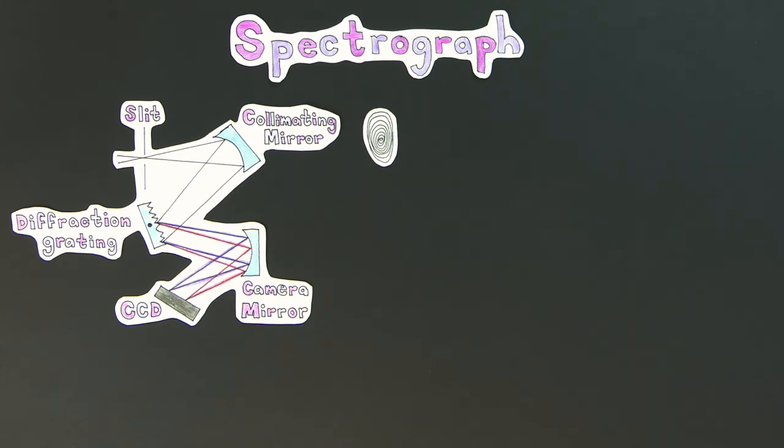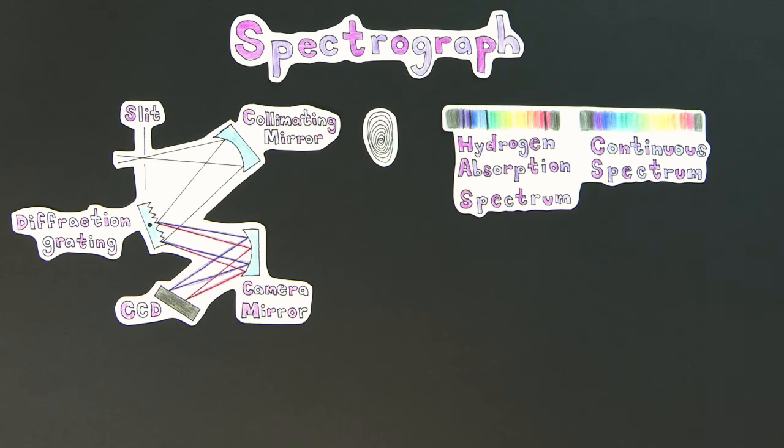Another impressive instrument is a spectrograph, which collects data on the chemical composition of an object. Each object in the universe will have a unique spectra associated to it, like a fingerprint. When observed through an optical telescope, the spectra will consist of the visible spectrum, but there will be dark gaps in particular places.